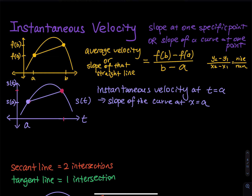I am asking you to find the slope of this curve at one specific point. That gives you the first difficulty. The only thing you've learned so far is finding the slope of a straight line — you pick two points and do rise over run: y2 minus y1 divided by x2 minus x1. But I am talking about a curve, so rise over run is not going to work. So how do you find the instantaneous velocity?